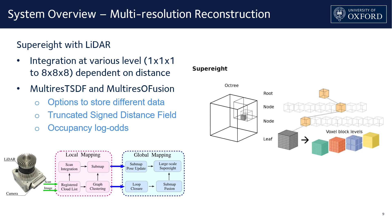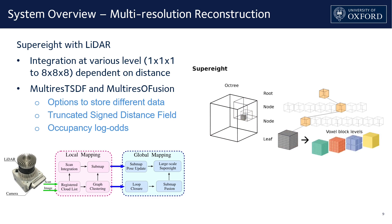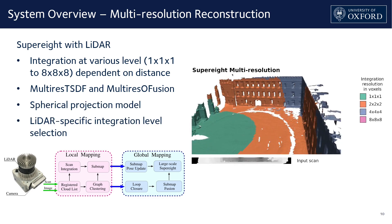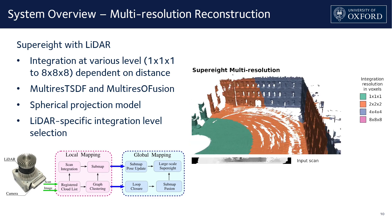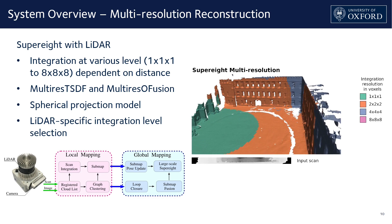Super8 takes on an octree structure on its high level, but on the lowest leaf it stores an 8x8x8 voxel block instead of a single voxel, allowing scan integration at adjustable resolution. Taking advantage of the sparsity in the space, this feature leads to fewer memory allocations. In addition, we can store either TSDF or occupancy information in the reconstruction for different robotic applications. In order to incorporate LiDAR scans, we added a spherical camera model into Super8 on top of the pinhole camera model for RGBD cameras. We also updated the selection of scan integration level to better suit the noise model of LiDAR and to reduce aliasing artifacts in the reconstruction.